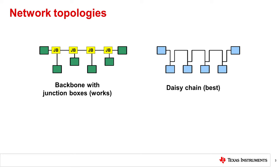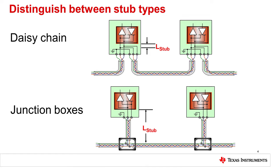If a non-ideal network topology must be used, it is best to insert a repeater node at each junction. The stub length is defined as the T-junction from where three lines intersect to the device pins. For the daisy chain topology, this occurs on the PCB board at the two joining transmission cables and the traces to the RS-485 transceiver. For the junction box approach, this occurs at the main transmission wire and the joining wires into the device pins. Because the daisy chain topology allows for much smaller stub lengths, this helps reduce reflections into the main transmission line, which is the main reason this topology is preferred.